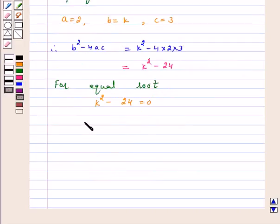This implies k² = 24, which implies k = ±√24. Therefore, this is equal to k = ±2√6.